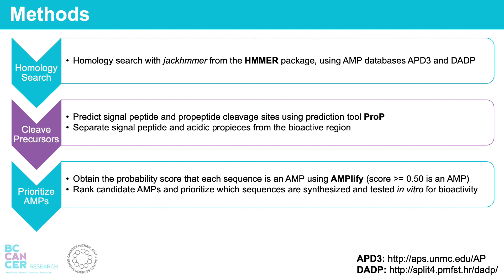Next, to find AMPs in our protein sequences, homology search is conducted using HMMER, trained on AMP sequences from AMP databases APD3 and DADP. Then, the signal and pro-peptide cleavage sites of these potential AMP precursors are predicted and cleaved using ProP. Then, each cleaved sequence is run through Amplify, a deep learning model trained on amphibian AMPs, to determine the probability that the sequence is an AMP.